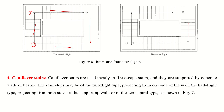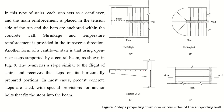Another type is cantilever stairs, which work like a cantilever beam. The stair is supported at one point — whether a beam, column, or wall — and the entire stability depends solely on that support system.